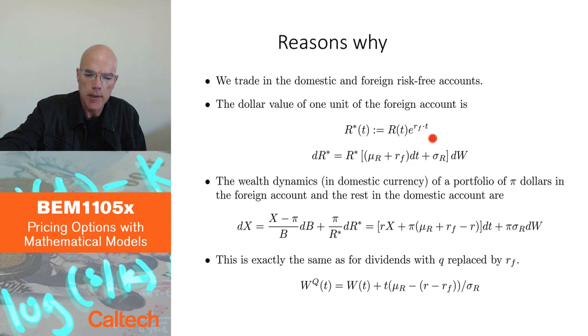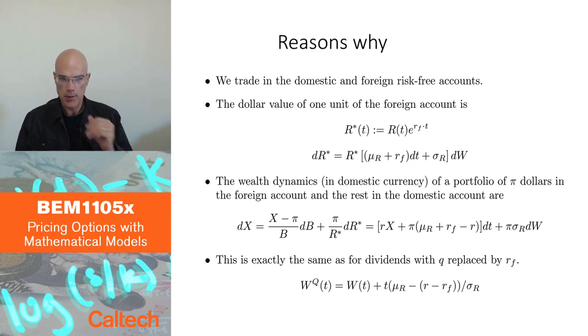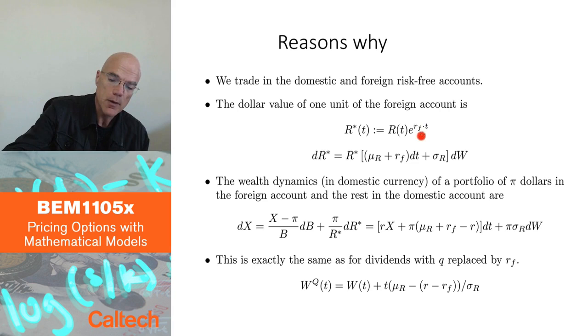And I will need the dynamics of that. So I'll just do Ito's rule, dR*. So this is a simple product where the second term in the product doesn't actually have a Brownian motion in it. So it's simple product differentiation. And as we saw before, when you're multiplying by exponential, what happens is you just add the exponent here dt. So r_F dt.